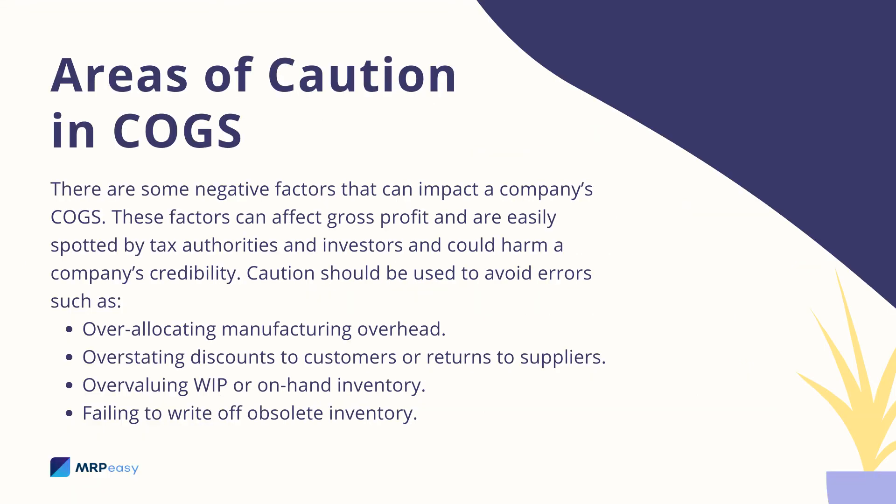There are some negative factors that can impact a company's COGS. These factors can affect gross profit and are easily spotted by tax authorities and investors, and could harm a company's credibility. Caution should be used to avoid errors such as: over-allocating manufacturing overhead, overstating discounts to customers or returns to suppliers, overvaluing WIP or on-hand inventory, and failing to write off obsolete inventory.